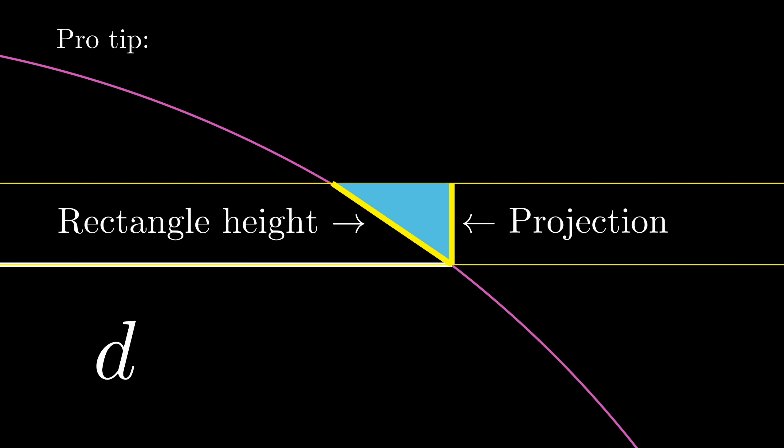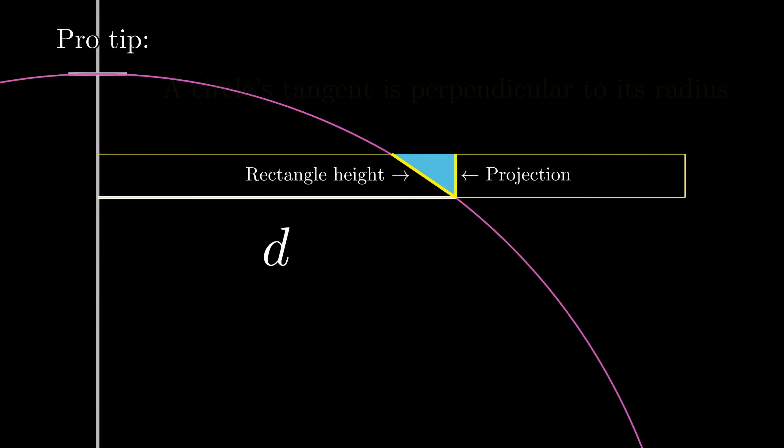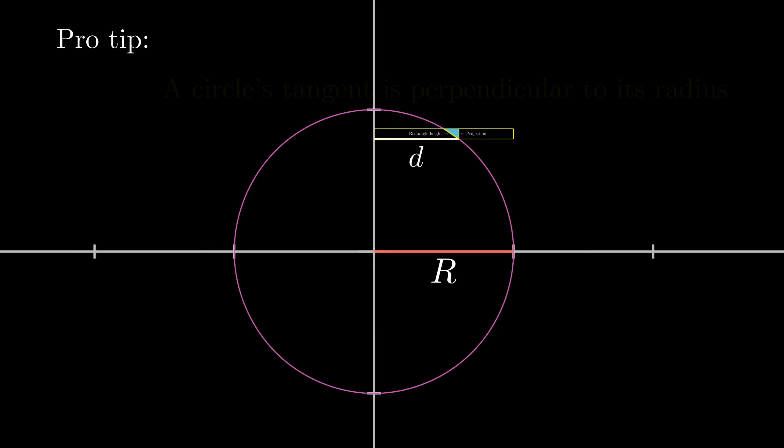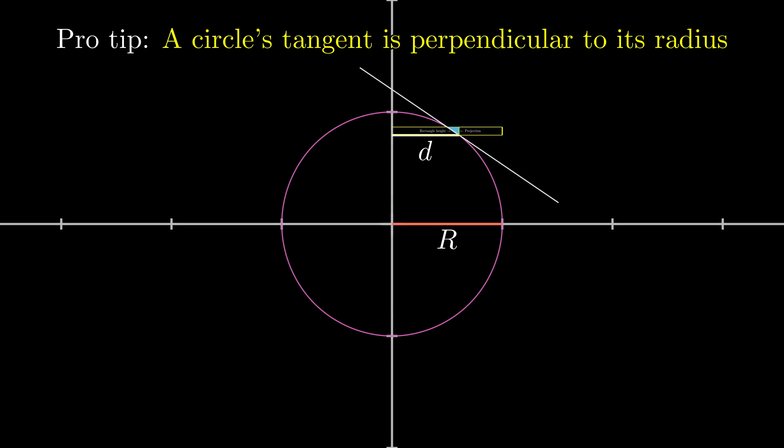Pro tip, any time you're doing geometry with circles or spheres, keep in the forefront of your mind that anything tangent to the circle is perpendicular to the radius drawn to that point of tangency. It's crazy just how helpful that one little fact can be for making progress.